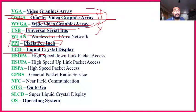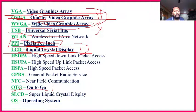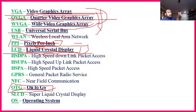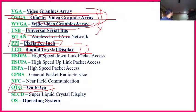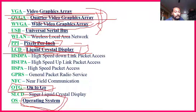LCD — Liquid Crystal Display — is very important. Your TV screen is called LED. LCD stands for Liquid Crystal Display. OTG — On The Go — is important. I use OTG to connect my pen drive to my mobile. OS — Operating System — is important. Which operating system: Windows or Mac? This depends on the operating system and is also important.